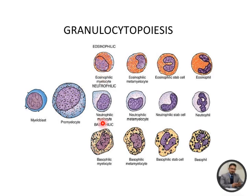Looking at eosinophil, it follows the same stages: myeloblast, then promyelocyte, then eosinophilic myelocyte, eosinophilic metamyelocyte, eosinophilic band cell (also called stab cell), and then mature eosinophil. Basophil also matures through the same process. So we have six stages for granulopoiesis for each cell: myeloblast, promyelocyte, myelocyte, metamyelocyte, stab/band cell, and then the mature granulocyte.